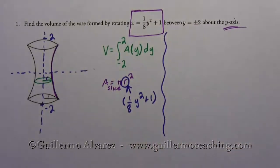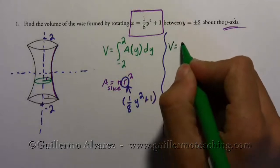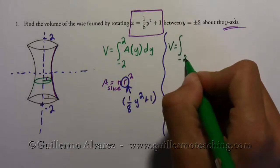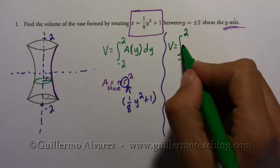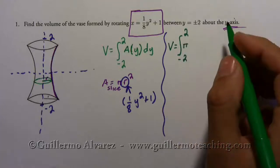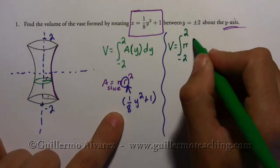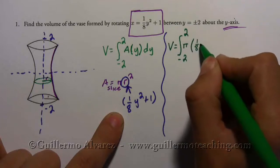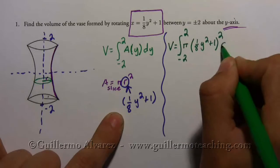Okay, so then I can now find the volume. So then the volume is going to equal the integral from negative two to two of pi times one eighth y squared plus one, squared, dy.